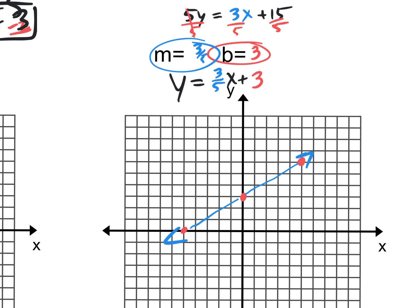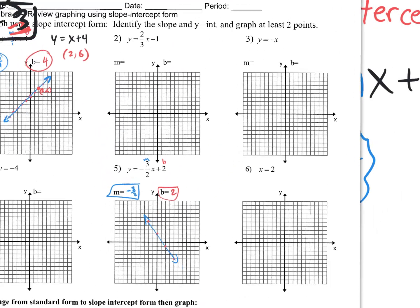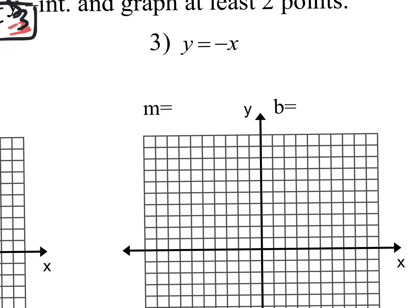Some are easier but people get confused by them. For example, number 3 — it's really the same thing. What is your b-value? It's a number being added at the very end, and there is no number being added, so you could put plus 0. The b-value is 0. And the slope is the number in front of x — in this case, negative 1 over 1. So you would cross at 0, go up 1 over 1, and you could keep going with that pattern forwards and backwards, then draw your line with arrows.